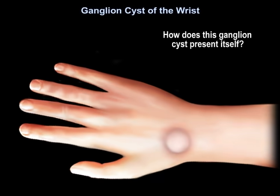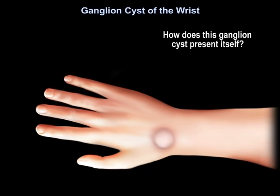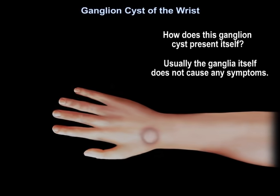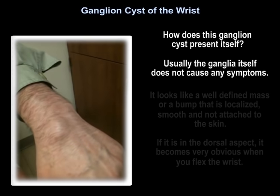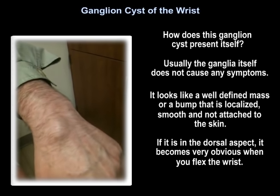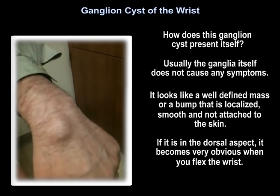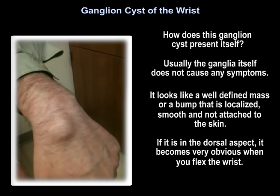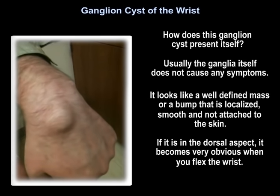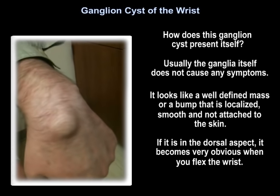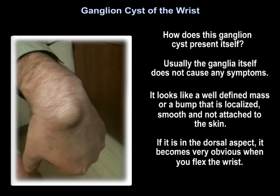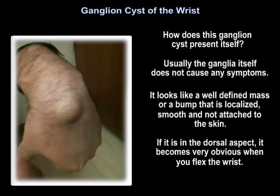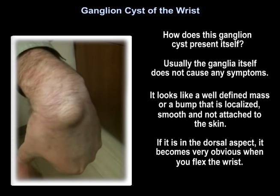How does a ganglion cyst present? Usually it doesn't cause any symptoms. It looks like a well-defined mass or bump — localized, smooth, and not attached to the skin. If it is on the dorsal aspect, it becomes very obvious when you flex the wrist.